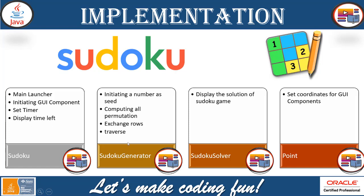The Sudoku Generator will initiate a number as a seed and then compute all the permutations for that particular seed, exchanging the rows and columns and traversing.